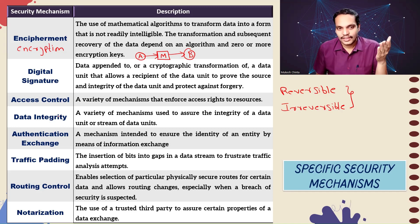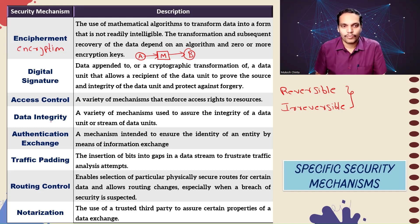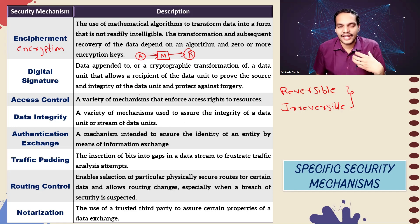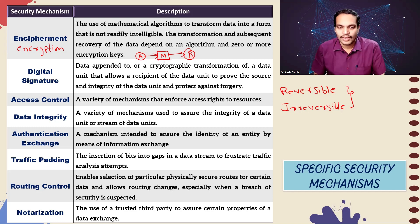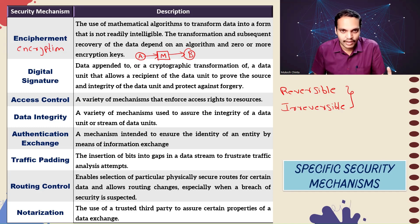Data integrity uses a variety of mechanisms to assure the integrity of a data unit or even a stream of data units. When the receiver receives message M, it must be ensured that this M is the exact copy of what was sent by A — that the message was received without any modifications. These mechanisms can be implemented for just one data unit or for a stream of all data units from A to B.